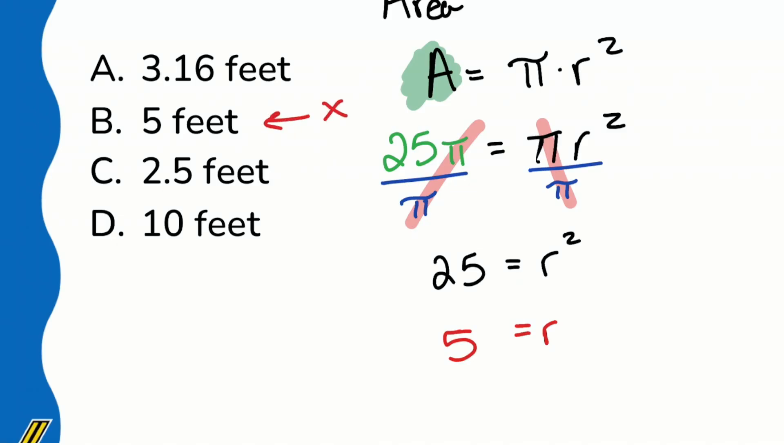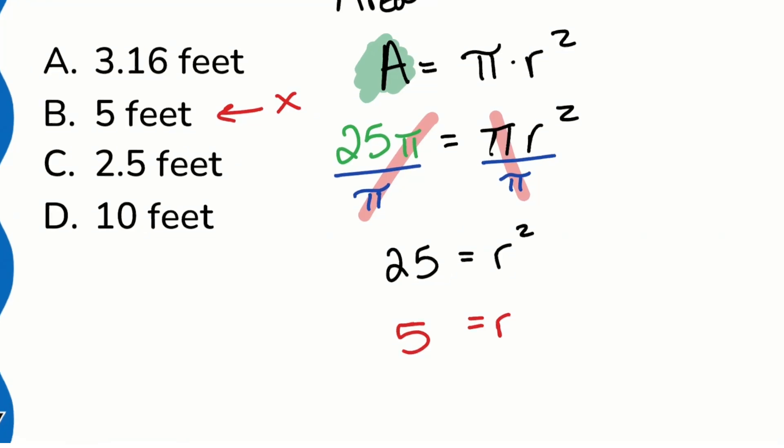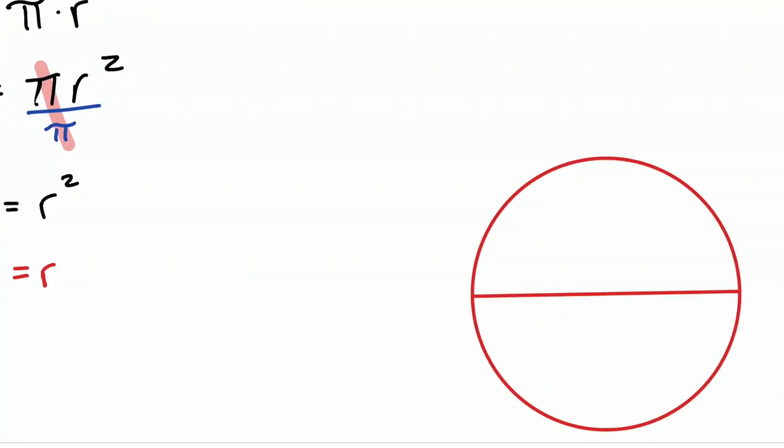And some of us think that we might be done there. Some of us might get tricked into selecting B, but that's not going to be the answer. Because remember, when we're looking at a circle, the radius is the midpoint all the way to the edge, so right here, so it's 5 here. Remember that the diameter covers the entirety, so that means that this over here is also 5.